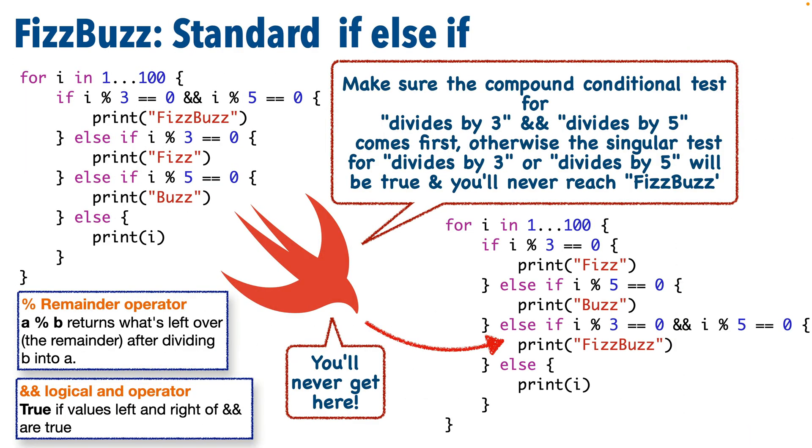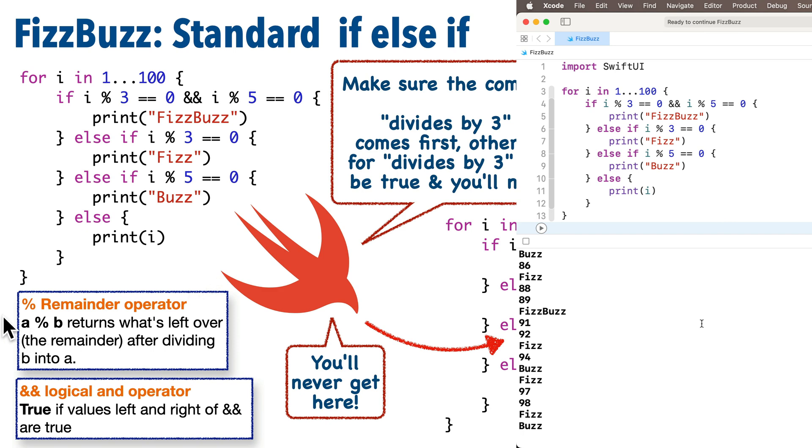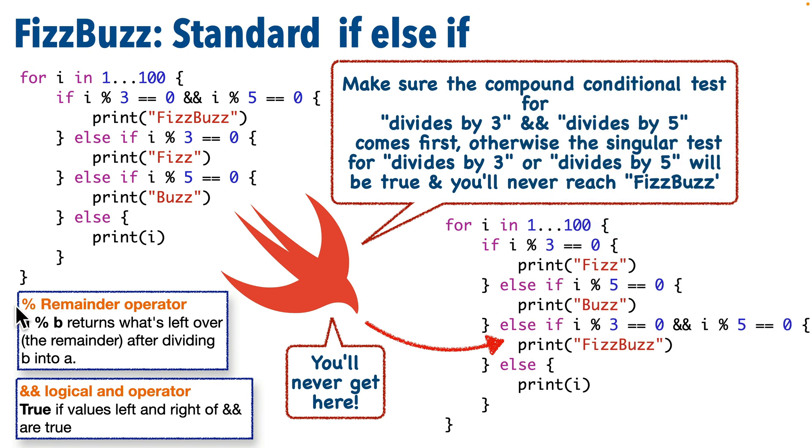Here's one of the most common solutions using standard if-else-if logic. Now the percentage operator is the remainder operator in Swift. Some programming languages call this the modulo operator. It returns the number that's left over, or the remainder, after dividing the number on the right into the number on the left. So if i remainder 3 is 0, then 3 divides evenly into i.